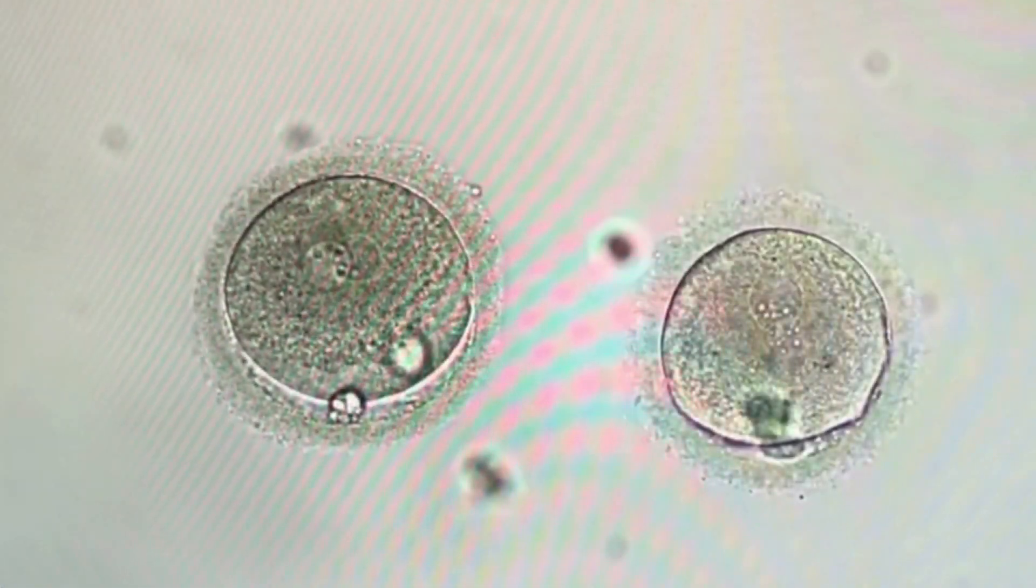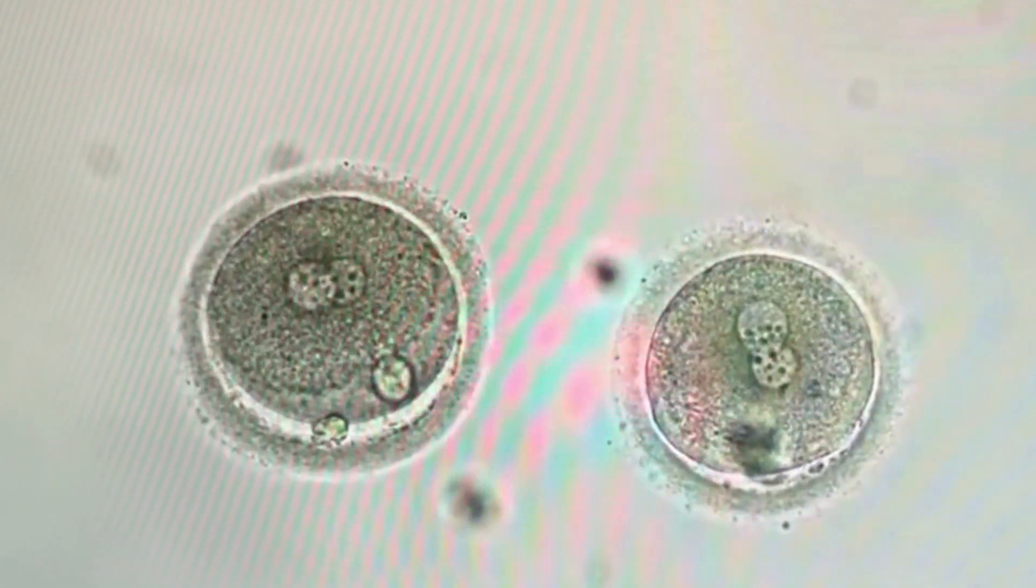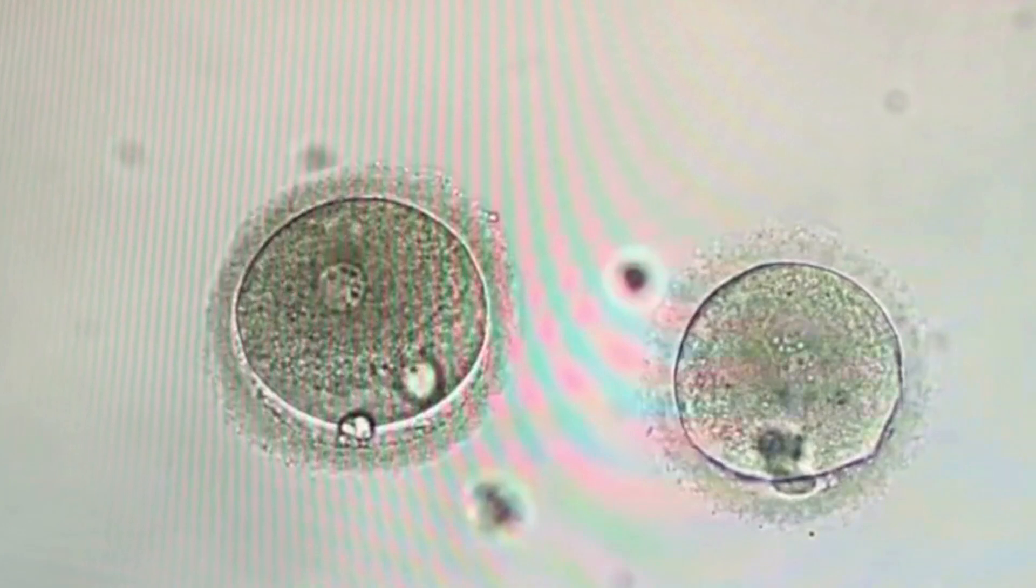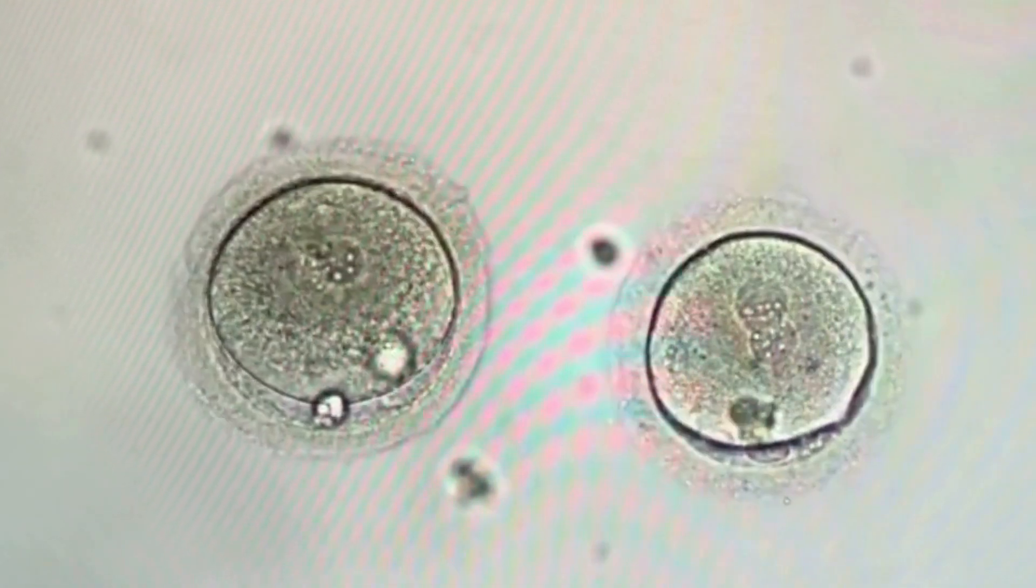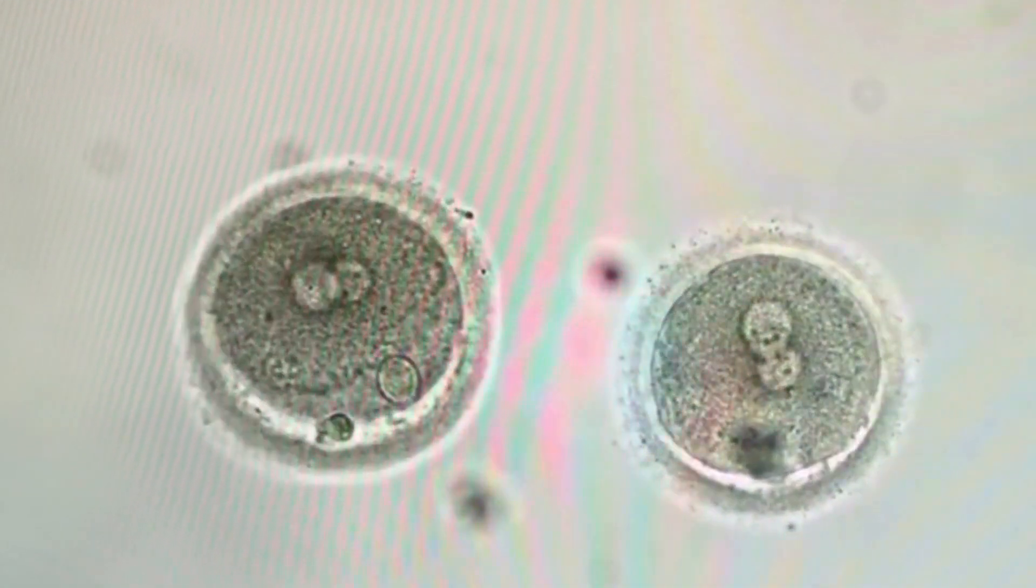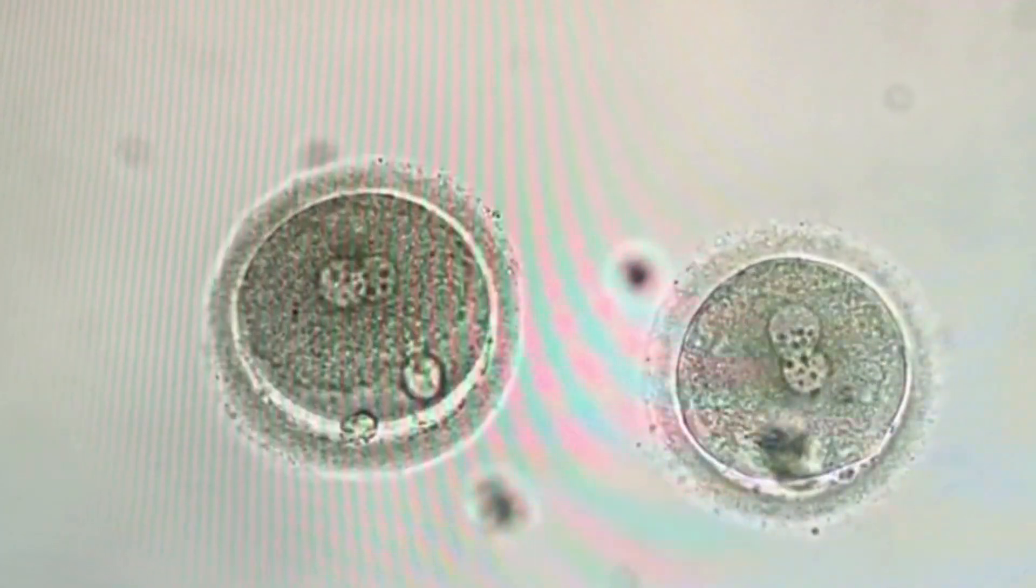After ICSI, the eggs are placed in the incubator and checked for fertilization about 18 hours later. Here are two fertilized eggs or now they're called zygotes. Fertilization is indicated by the appearance of two pronuclei, which are the circular structures inside the cytoplasm of the egg.